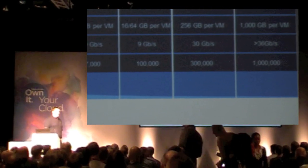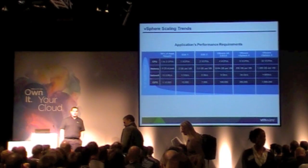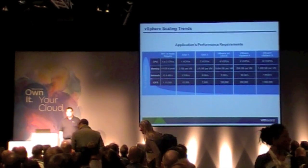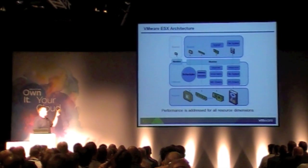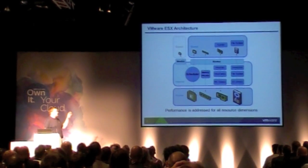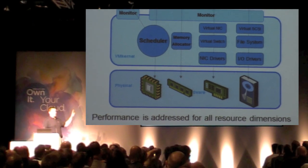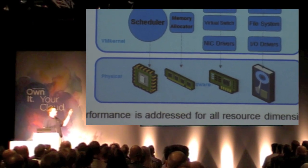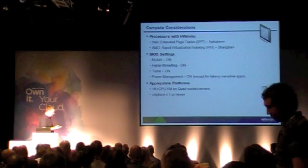We did some testing and set the bar: can we achieve a million IOPS out of a single ESX host? I always like to pull everybody back to the simple architecture picture — it always boils down to the four resource dimensions: CPU, memory, network, and storage. So let's talk about compute.